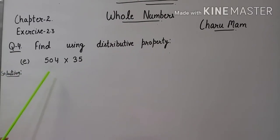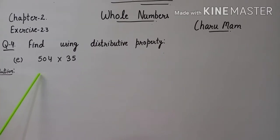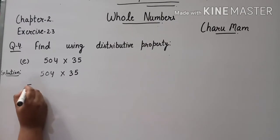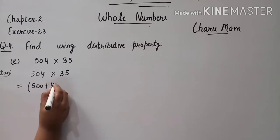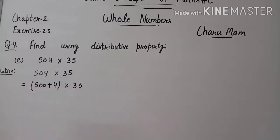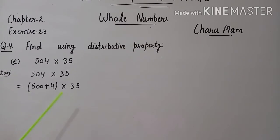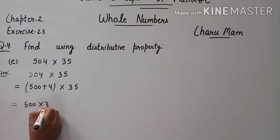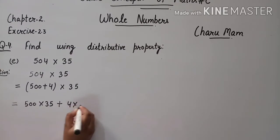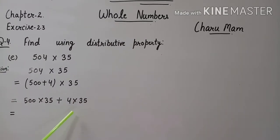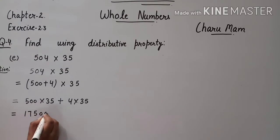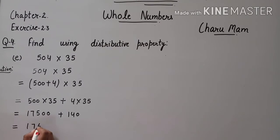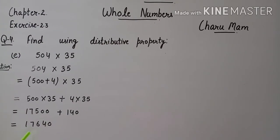Question 4 E part: 504 multiply 35. इससे भी हम distributed property apply करके solve करेंगे. So, we start solution. First of all हम 504 को simplify करेंगे — इसे हम 500 plus 4 की form में लिखेंगे, then multiply 35. अब हम distributed property apply करेंगे: 500 को 35 से multiply करेंगे, then plus, फिर 4 को 35 से multiply करेंगे. अब हम इन्हें multiply करेंगे, then add करेंगे. तो add करके क्या आया? 17,640.